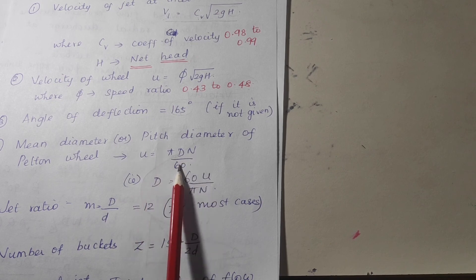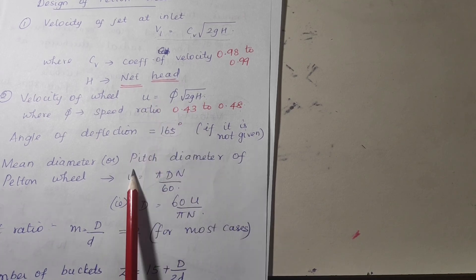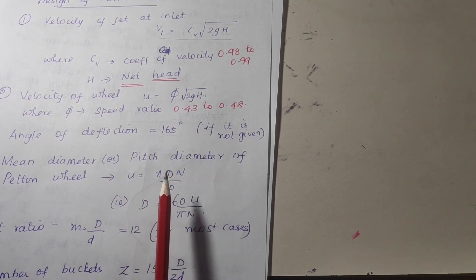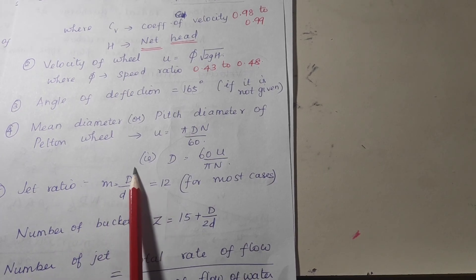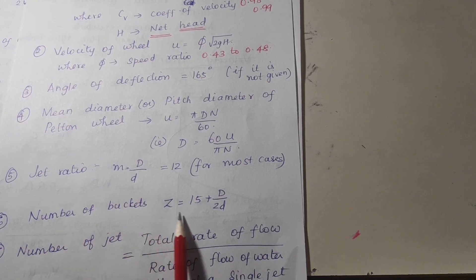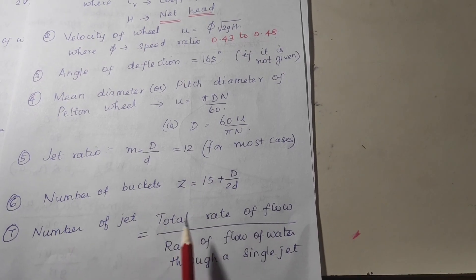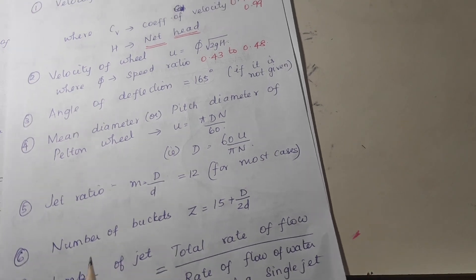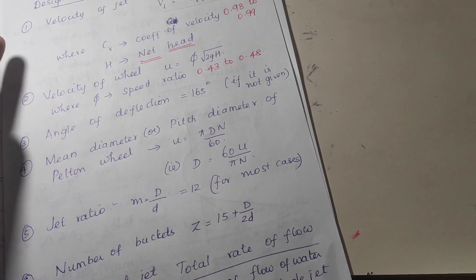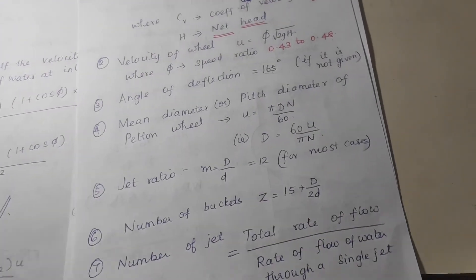Fourth, mean diameter of the Pelton wheel: using u = πDN/60, substitute the found value of u to calculate diameter D. Fifth, jet ratio m = D (mean diameter) divided by d (jet diameter). Sixth, number of jets equals total rate of flow divided by rate of flow through a single jet. Keep these seven points in mind while designing the Pelton wheel.